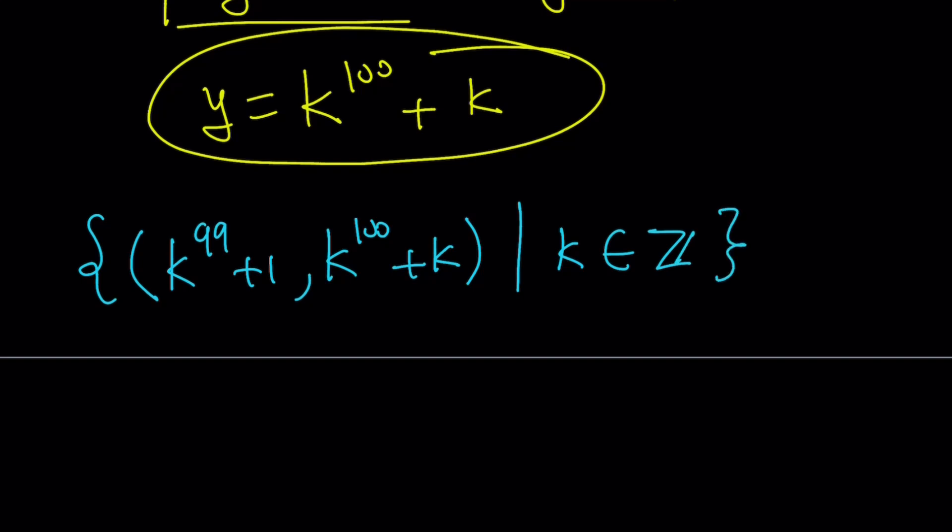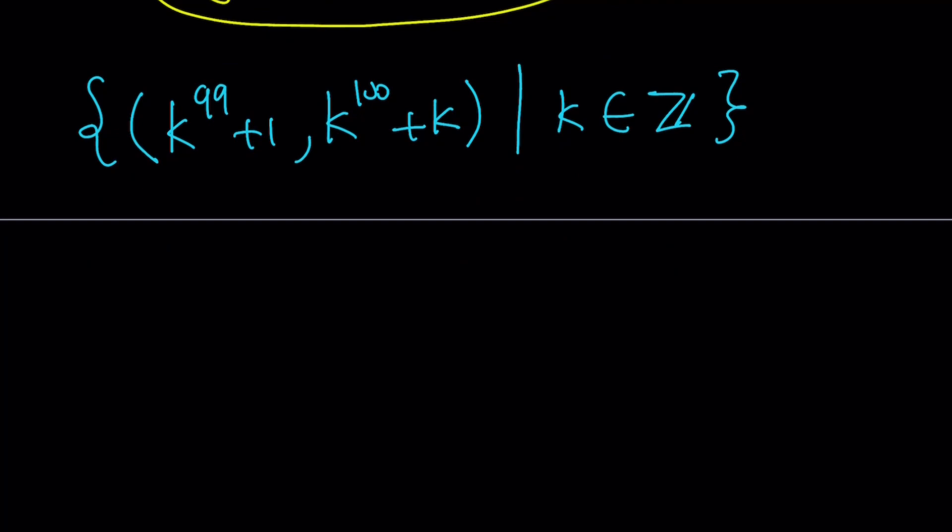Let's go ahead and take a look at a couple particular values, and then we're going to finish up. All right, so for example, if t is equal to negative 1, we're going to get (0,0). If t is equal to 0, then we're going to get (1,0).